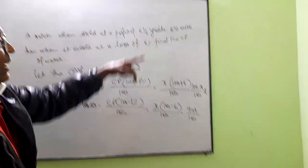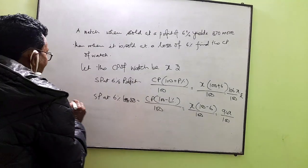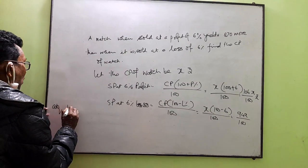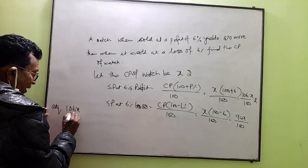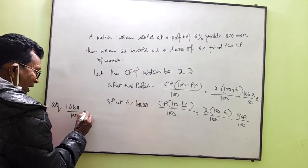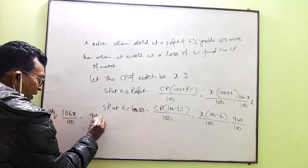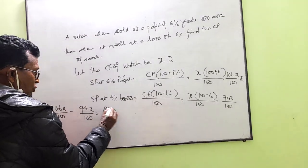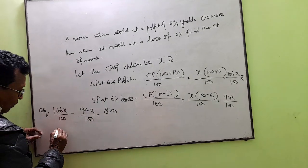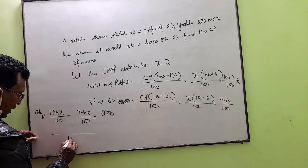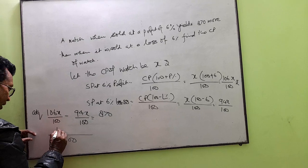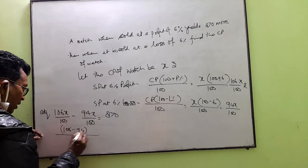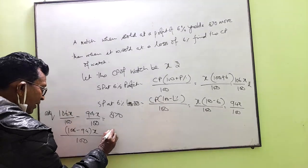According to the question, this difference is 870. So according to the question, 106x by 100 minus 94x by 100 is equal to 870. So when you will solve it, it will be 106 minus 94 into x is equal to 870. That is 12x is equal to 870.